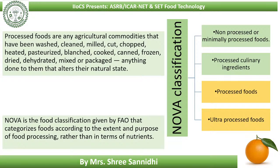Based on the level of processing, there is a classification called NOVA classification. NOVA is the food classification given by FAO that categorizes foods according to the extent and purpose of food processing, rather than in terms of nutrients. There are four groups in NOVA classification: first, non-processed or minimally processed foods; second, processed culinary ingredients; third, processed foods; and fourth, ultra-processed foods. Today we will focus more on processed foods and some ultra-processed foods.